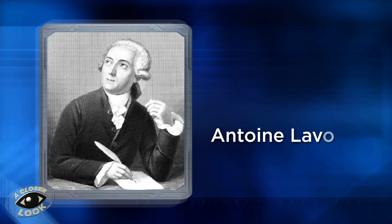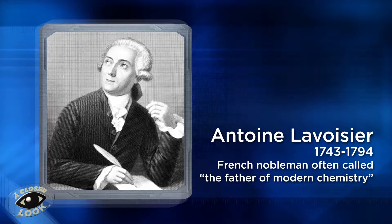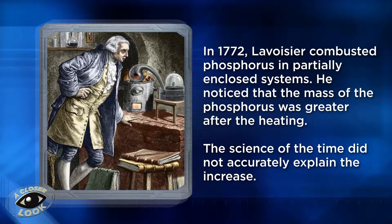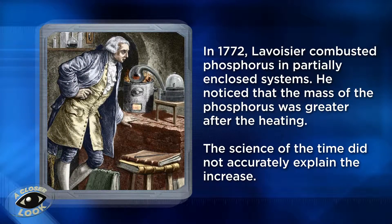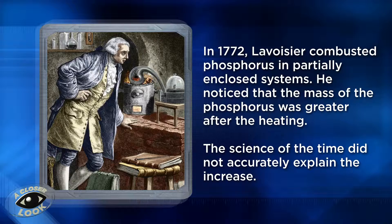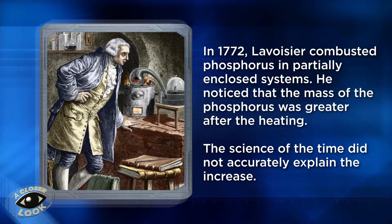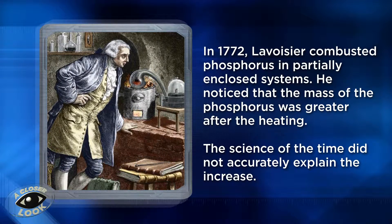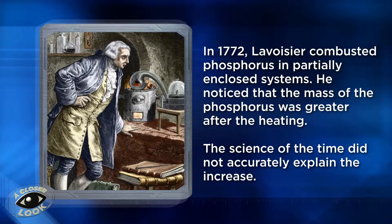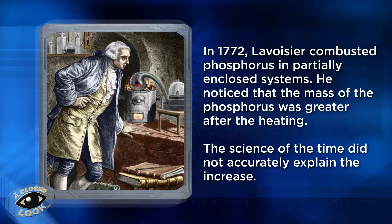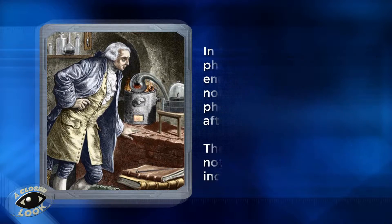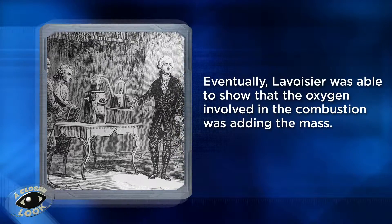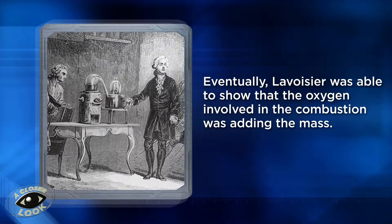The scientist who discovered this principle was Antoine Lavoisier. In 1772, Lavoisier combusted phosphorus in partially enclosed systems. He noticed that the mass of the phosphorus was greater after heating. The science of the time did not accurately explain the increase.